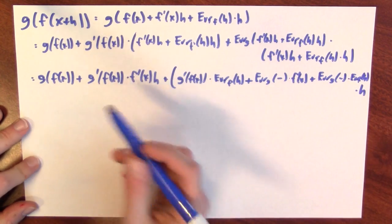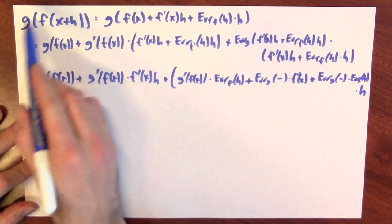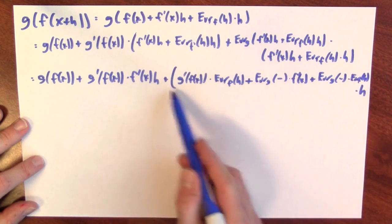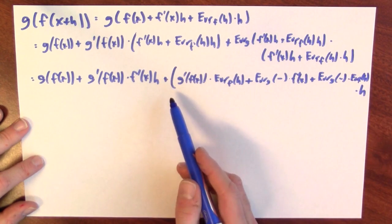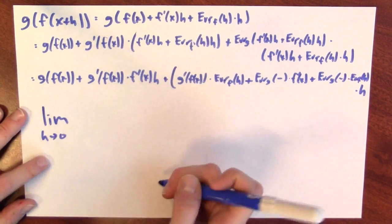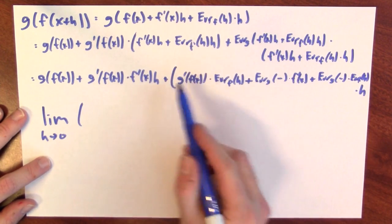All right. Now, this is almost giving me the derivative of the composite function, provided that I can control the size of this error term. All right, what I need to show now is that the limit as h approaches 0 of this error term is really 0.